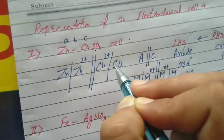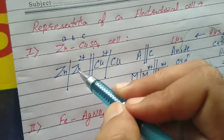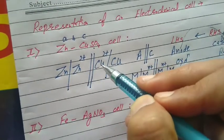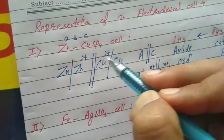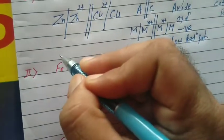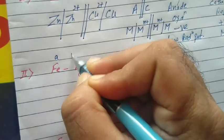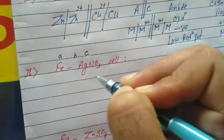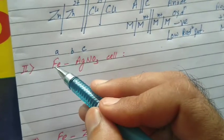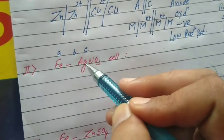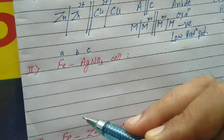So: anode first, metal then metal ion, two vertical lines for the salt bridge, then cathode with the cation part of the metal ion then metal. The trick is A, B, C. What happens at anode? Oxidation of the metal electrode. What happens at cathode? Reduction of the cation part of the electrolyte.